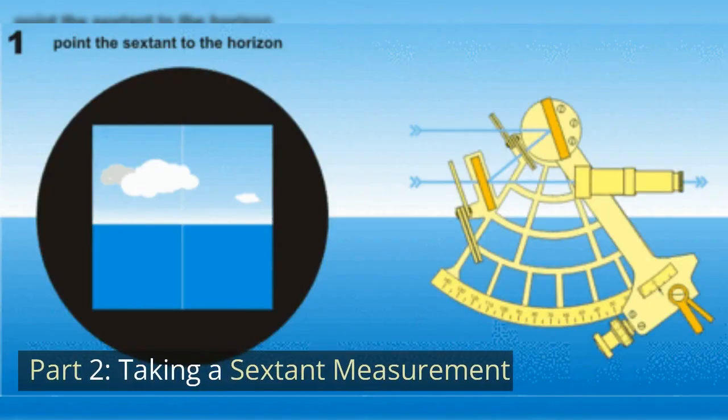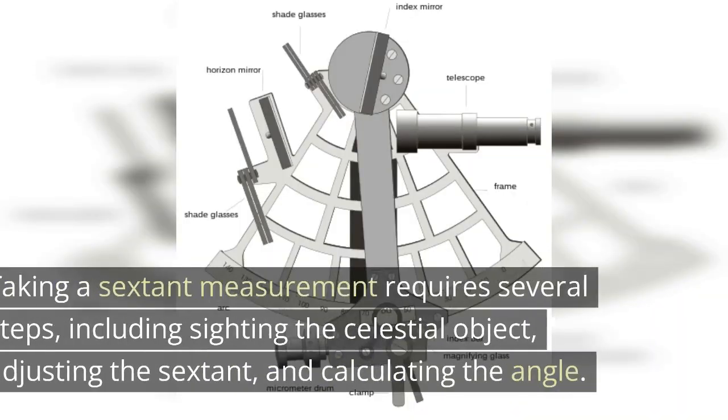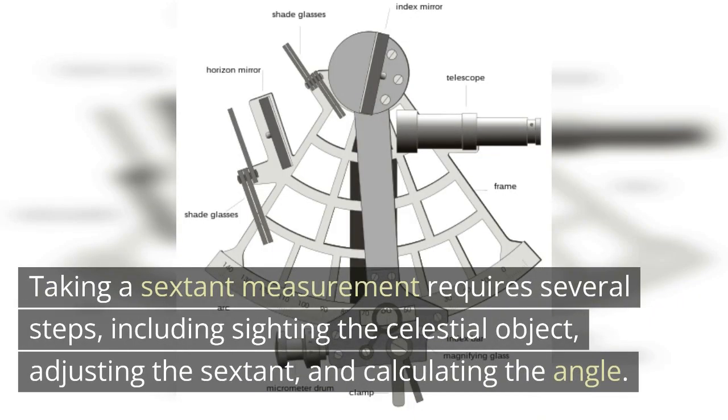Taking a sextant measurement requires several steps, including sighting the celestial object, adjusting the sextant, and calculating the angle.